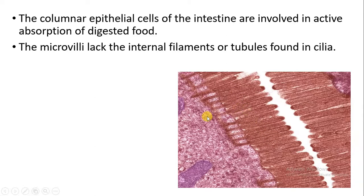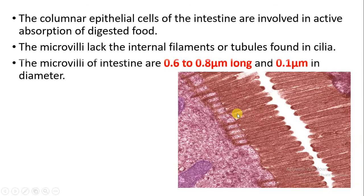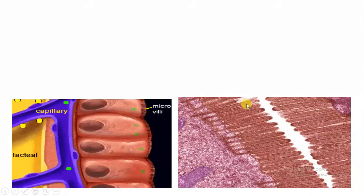When we talk about cilia, they have some internal filaments or tubules inside, but when we talk about microvilli, they don't have any kind of internal filaments or tubules. The length of microvilli is about 0.6 to 0.8 micrometers, and the diameter is about 0.1 micrometer.